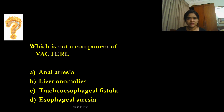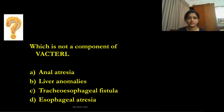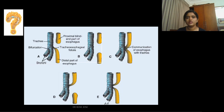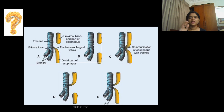Now let's solve a question: which is not a component of VACTERL? The answer is liver anomalies — L stands for limb anomalies, not liver anomalies.